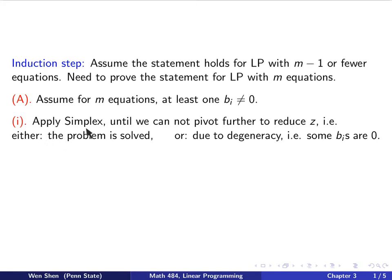we would apply simplex algorithm until we cannot pivot further to reduce the z value. That is, two possibilities. Either the problem is solved, and then great, then we stop. Or, because of degeneracy, the problem is not solved, and I cannot move further to reduce z because it's degeneracy, meaning some of the bi's on the right-hand side, they are zero. And we need to discuss further what to do then.